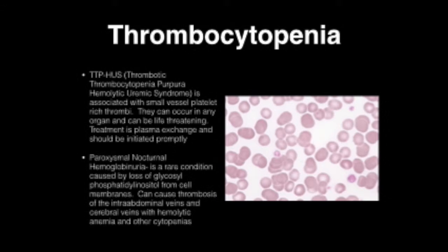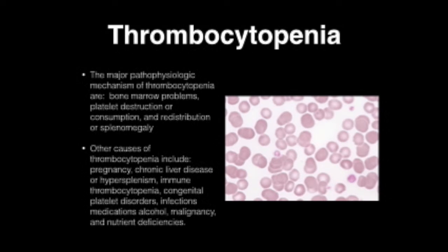Paroxysmal nocturnal hemoglobinuria is a rare condition caused by a loss of glycosylphosphatidylinositol from the cell membranes. It can cause thrombosis of the intra-abdominal veins and cerebral veins, with hemolytic anemia and other cytopenias. The major causes of thrombocytopenia are bone marrow problems, platelet destruction or consumption, redistribution, or splenomegaly.